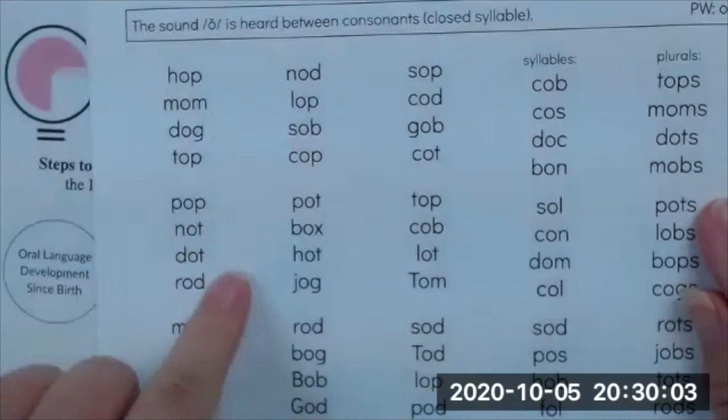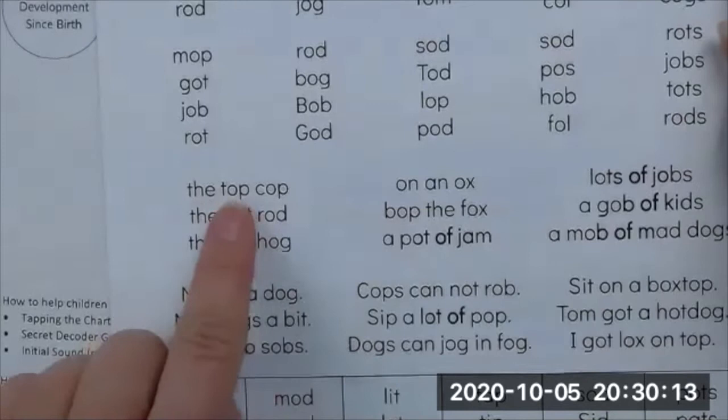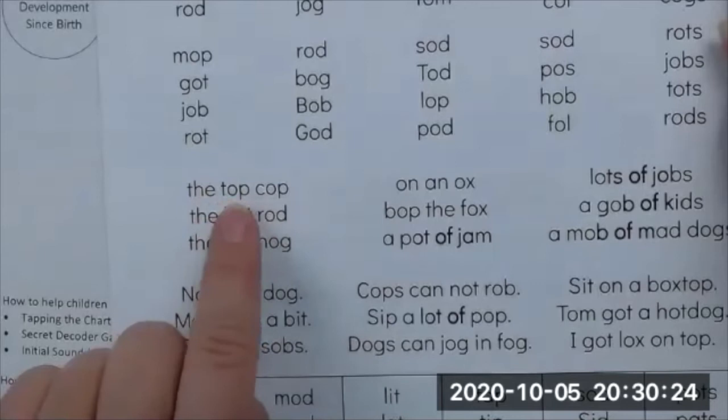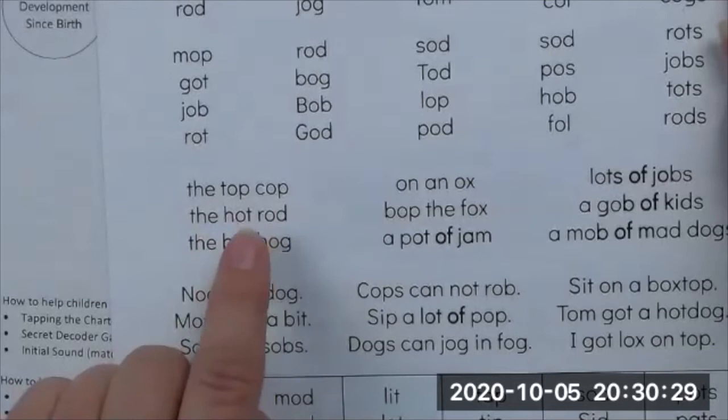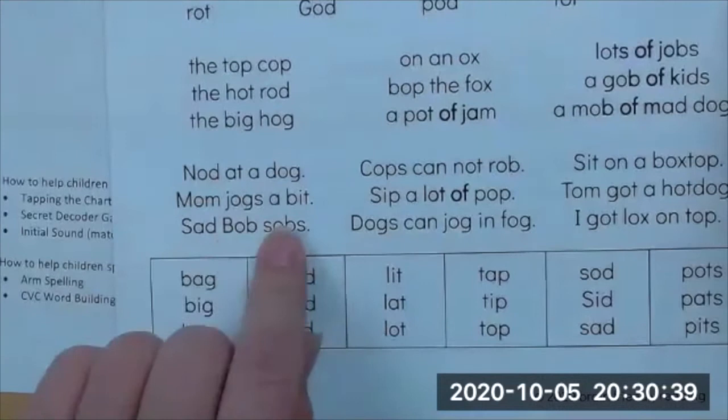Once that fluency is there, you move into reading phrases. You can take the words, cut them up onto separate cards, and have the child unscramble them into word order — that's where they're working on syntax. What is making meaning out of these phrases? Is it 'the rod hot' or 'the hot rod'? Which one makes sense? Does 'the' come at the beginning? And then you do the same thing with sentences, which provides another layer of difficulty.